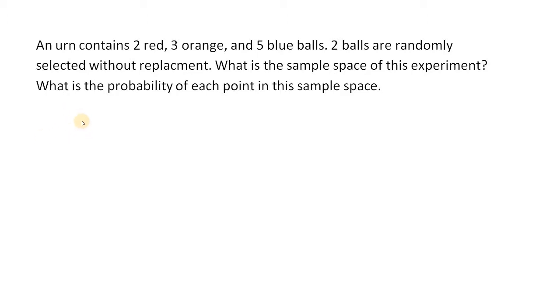We have 2 red, 3 oranges and 5 blue balls. So basically to get 2 balls out from these total of 10 balls, there should be 6 different outcomes: a red and an orange, a red and a blue, a red and a red, an orange and a blue, an orange and an orange, and a blue and a blue.